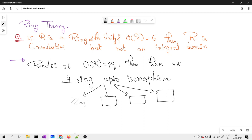See, in our case as well, since 6 can be written as 2 into 3, I know it is p into q where p and q are distinct prime numbers. Therefore there are four rings up to isomorphism of order 6.